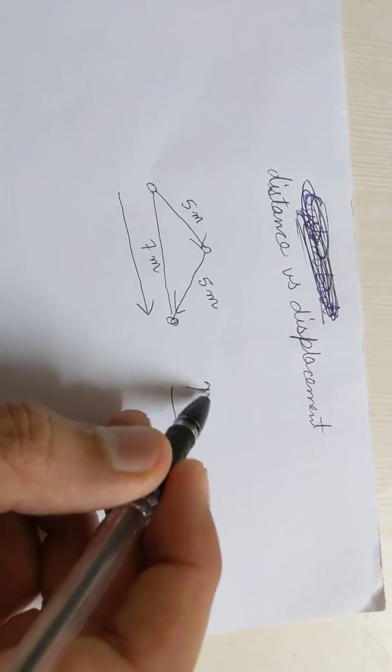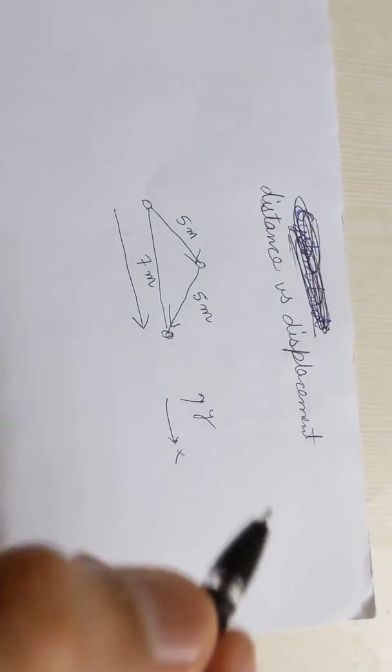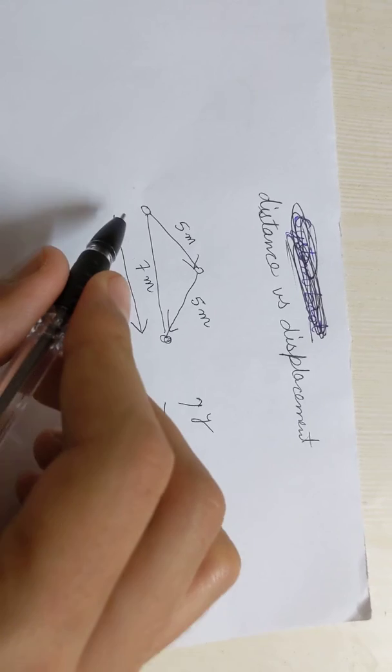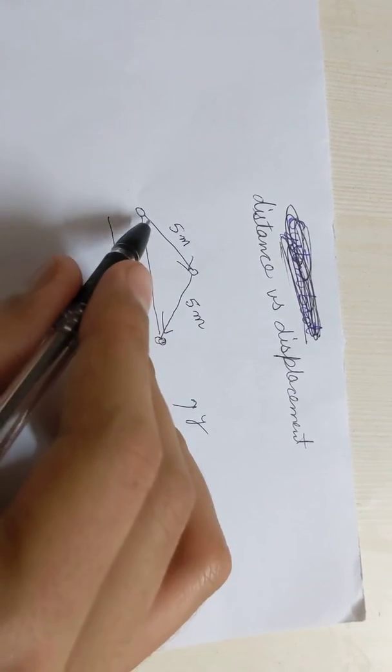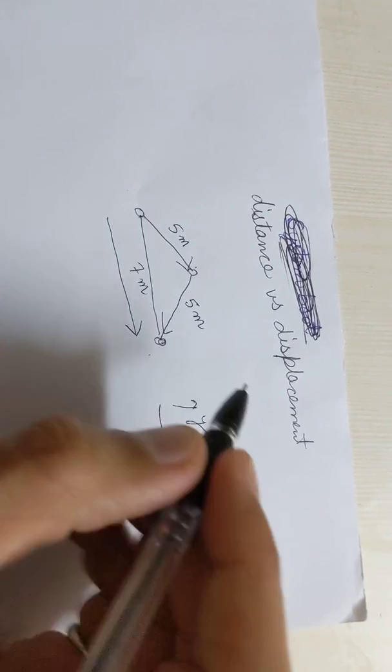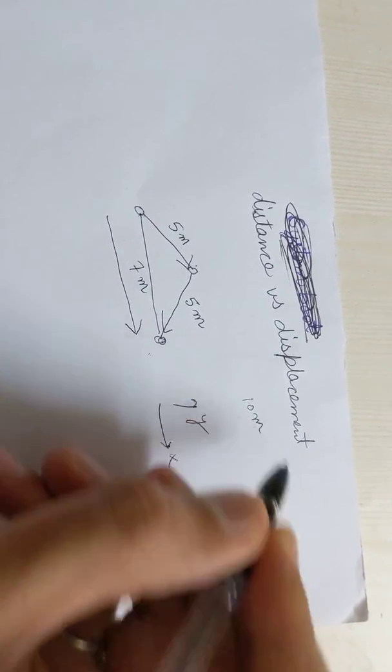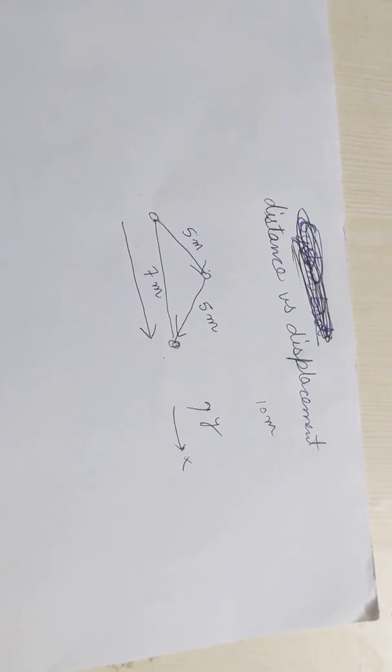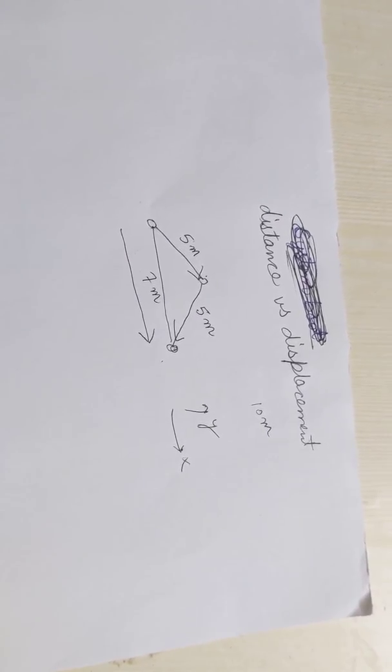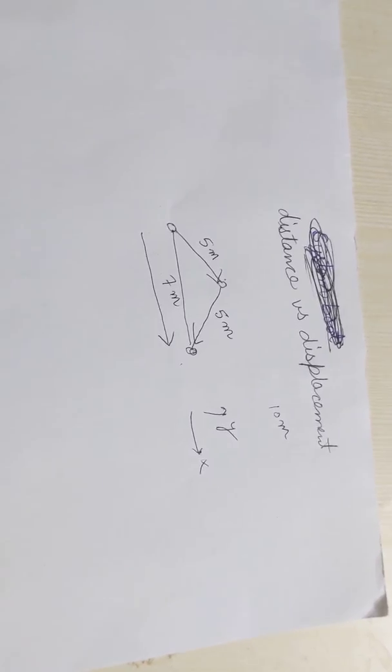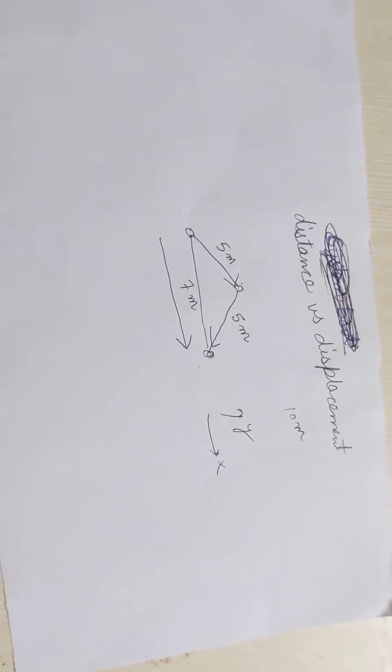However, the total distance traveled is 5 plus 5 equals 10 meters. So distance traveled is a scalar as compared to the vector displacement. Hope you liked the video, thank you friends.